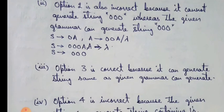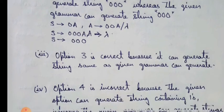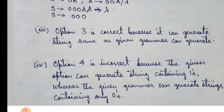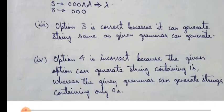We can see how it can be generated. S gives 0a, a gives 00a and null, s gives 000a and a gives null and putting the value of a as null, we get s is equal to 000. Option 3 is correct because it can generate strings same as given grammar can generate. Option 4 is incorrect because the given option can generate strings containing ones whereas the given grammar can generate strings containing only zeros.